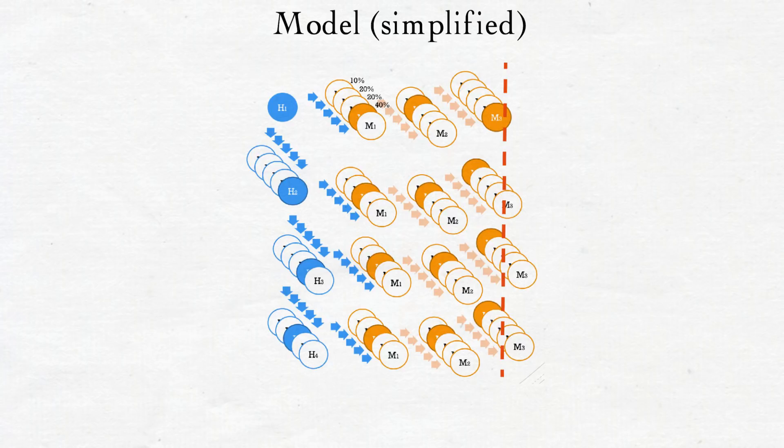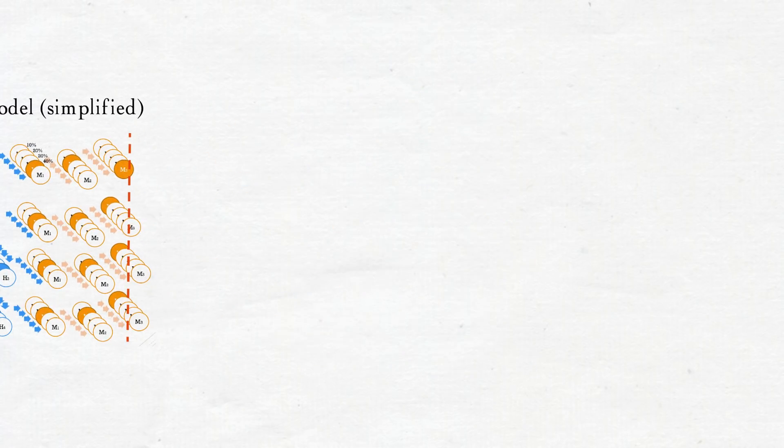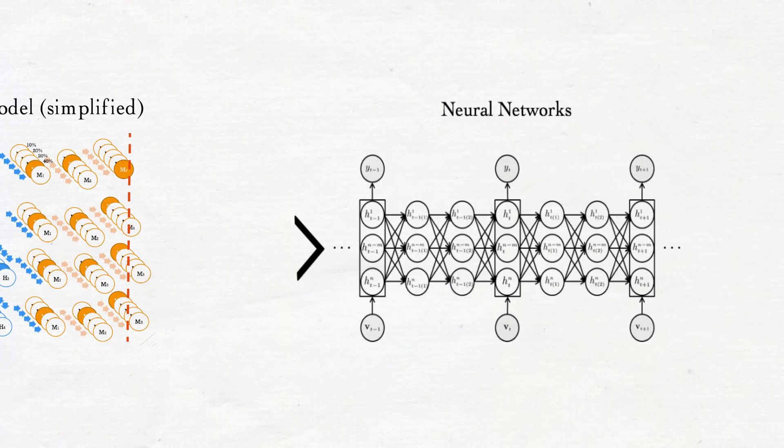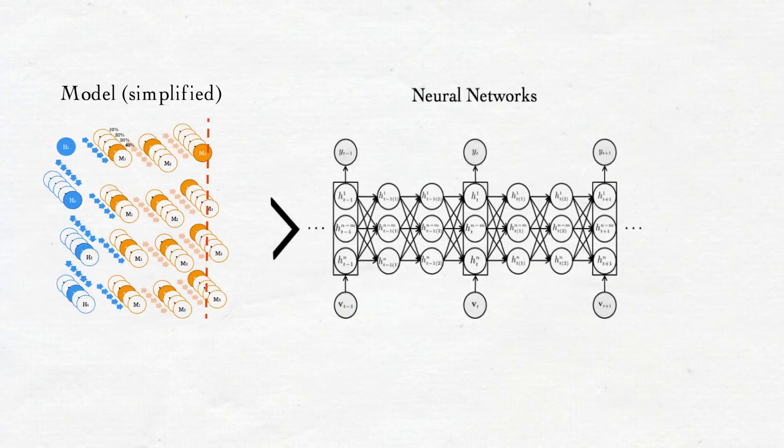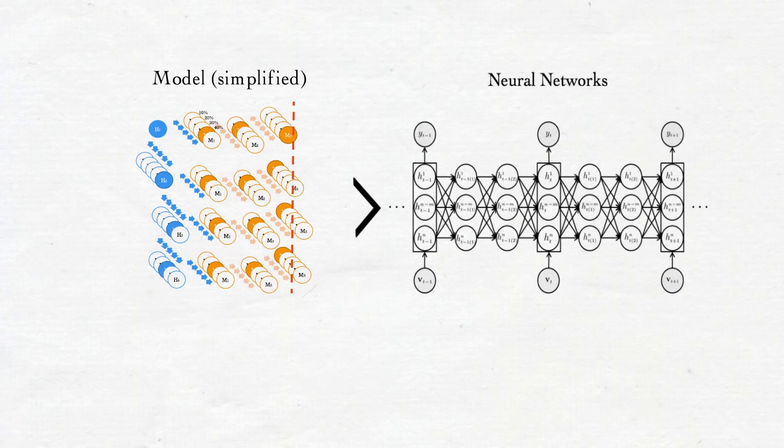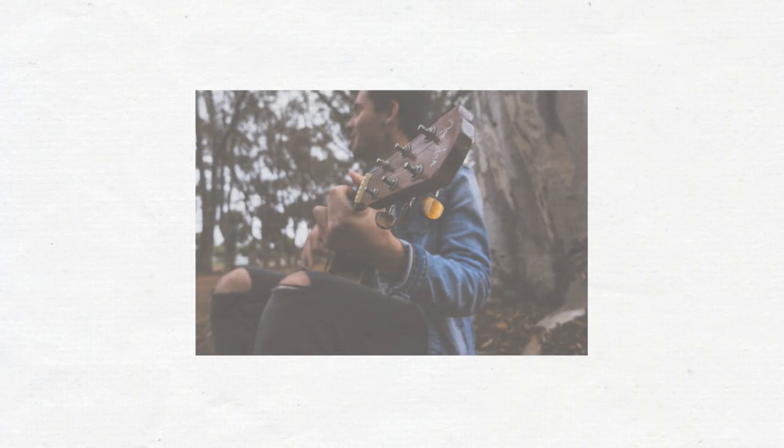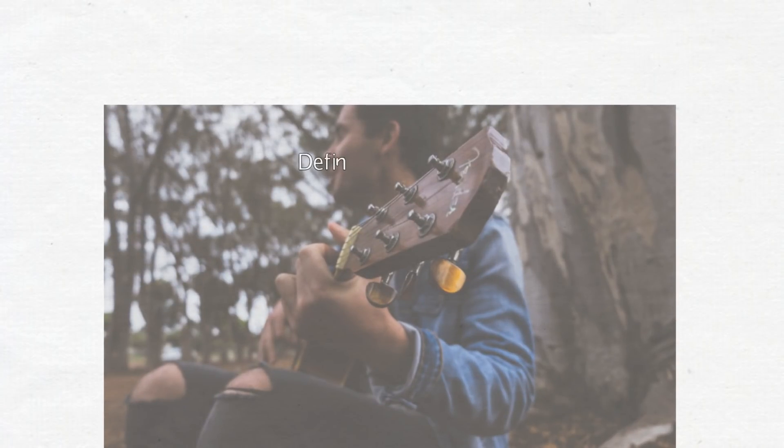So the question is, how do we evaluate this model? How can we say objectively that this model does better at producing pop music than a neural network model? That my music is more pop than their music? To answer this question, we must first understand what exactly defines pop music in the first place.